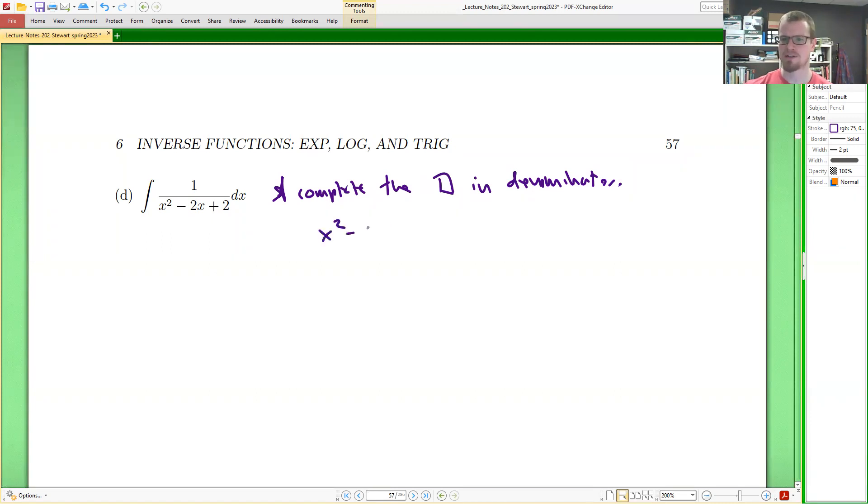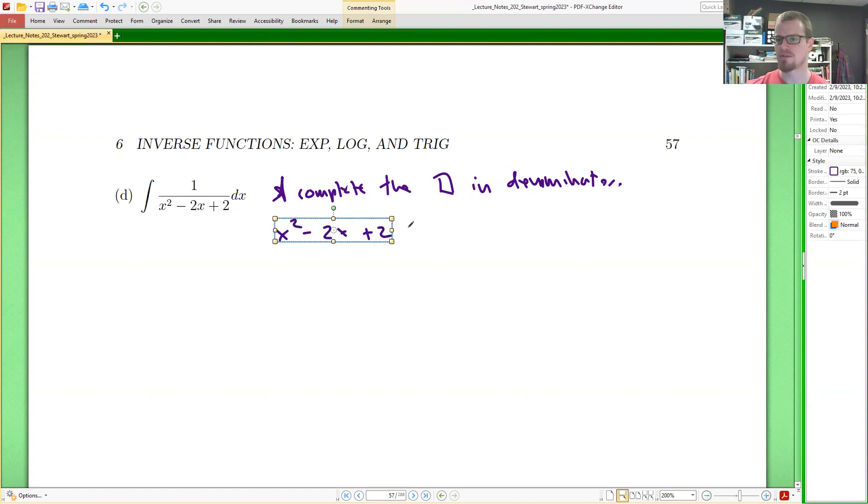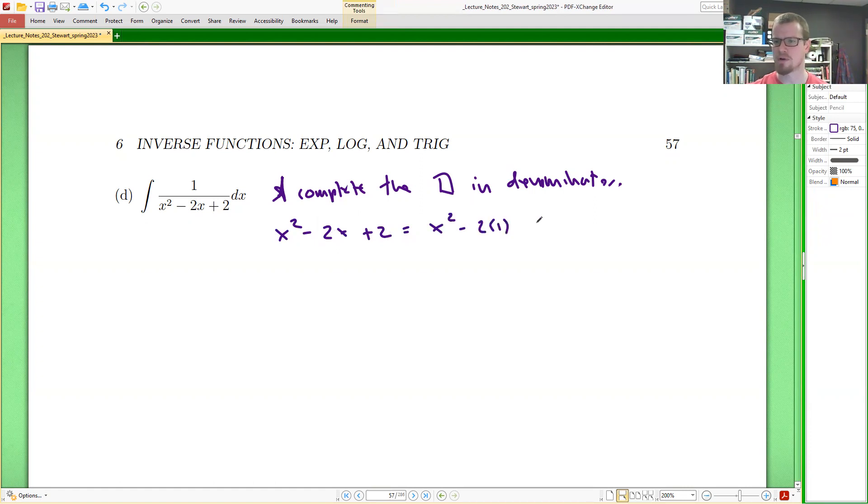I want to take x squared minus 2x plus 2 and write it as a perfect square. And the first manipulation that I might do is recognize that I have x squared minus 2 times 1x, right, 2 times bx. And then I want to add something to complete the square. I'll subtract that same thing. And I'm carrying along this plus 2, hoping that that will provide some assistance later.